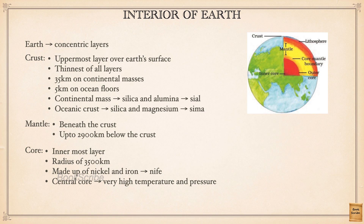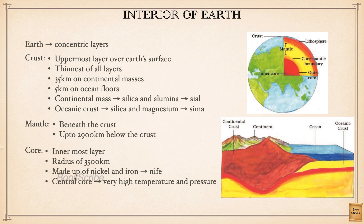The crust is the thinnest layer of the three main layers. In continental masses, that is where continents or land is present, the crust goes on an average of 35 kilometers deep from the surface. At some places it will be 20 kilometers, and in some places it can be more than 50 kilometers.